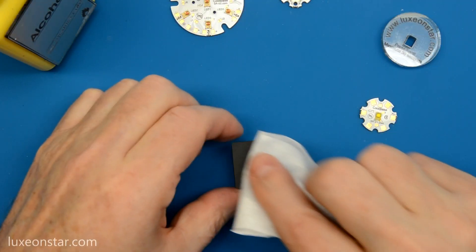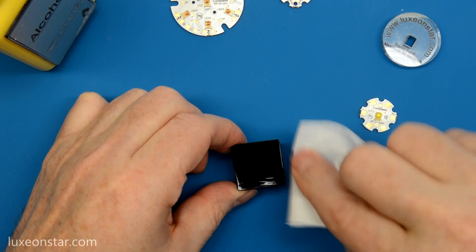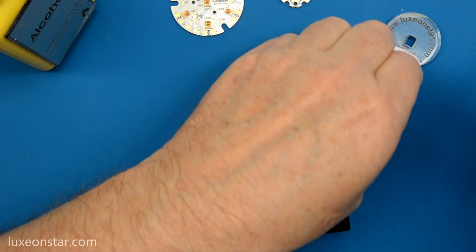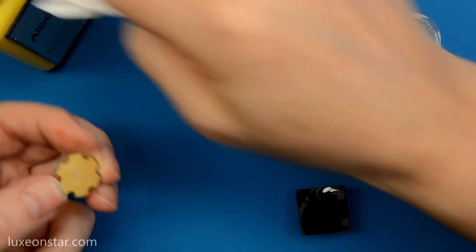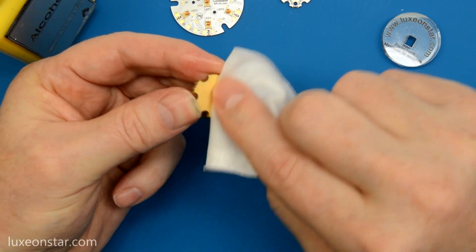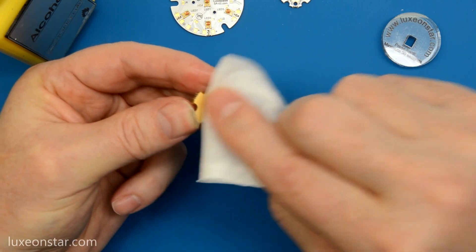I'm just going to clean off the top of the heat sink here. And you do the same thing for the back of the LED. Make sure that there's no greases or oils and the surface is nice and dry as well.